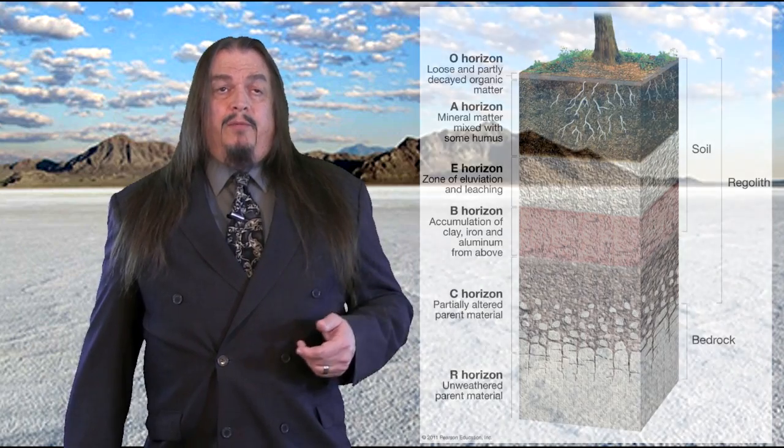Different isotopes of the same element share chemical properties but have slightly different physical properties. As a result, different isotopes experience physical changes differently, which means they end up concealed differently in different parts of the earth's system. We can measure the ratios in different parts of the system and use them to learn about the processes of change.